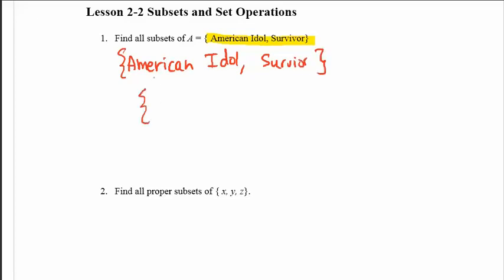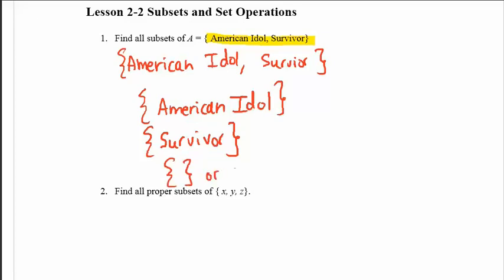The next one would be containing a smaller version of the original, so I can put just the element American Idol, just one element. I can put a set that just has the element of Survivor. And then finally, I can put a set that has no elements in it, or the empty set. So I was able to come up with four subsets of the original set.